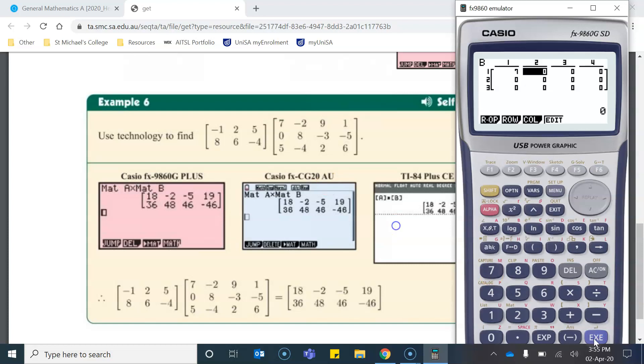I have 7, negative 2, 9, 1, 0, 8, negative 3, negative 5, 5, negative 4, 2, and 6.